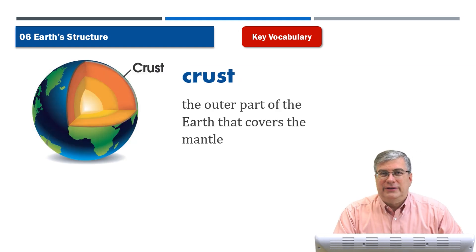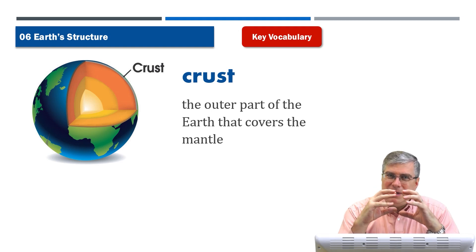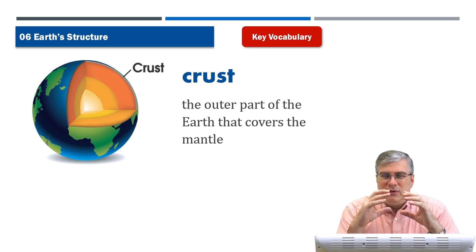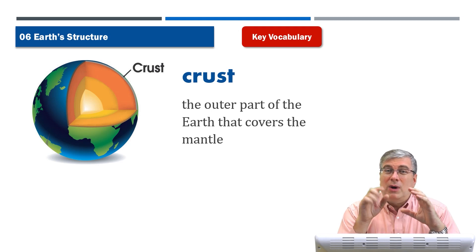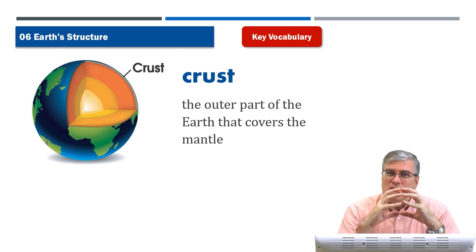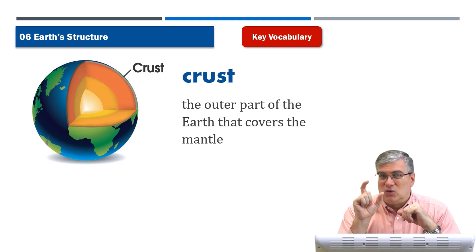Crust is an interesting word. I'm not talking about bread, but if you bake bread, it's soft in the middle but a little bit hard and browner on the outside — that's the crust. The earth has a similar idea. The earth has a crust as well, and that's the top layer of the earth's surface — the outer part of the earth that covers the mantle.